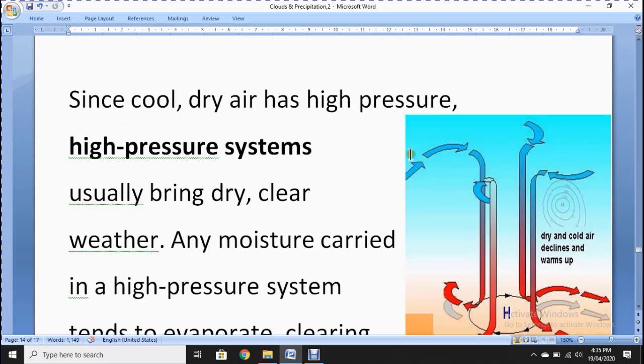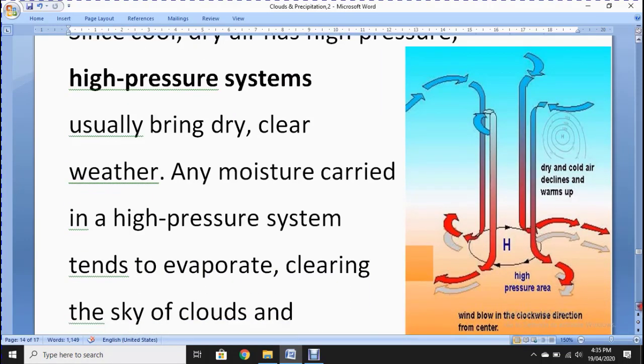Since cold dry air has high pressure. You can see here in this diagram to understand it well. High pressure systems usually bring dry, clear weather. You can see here there is no cloud. In high pressure areas, wind blows in the clockwise direction from center. It means it will go outside. So here the weather should be clear because there are no clouds.